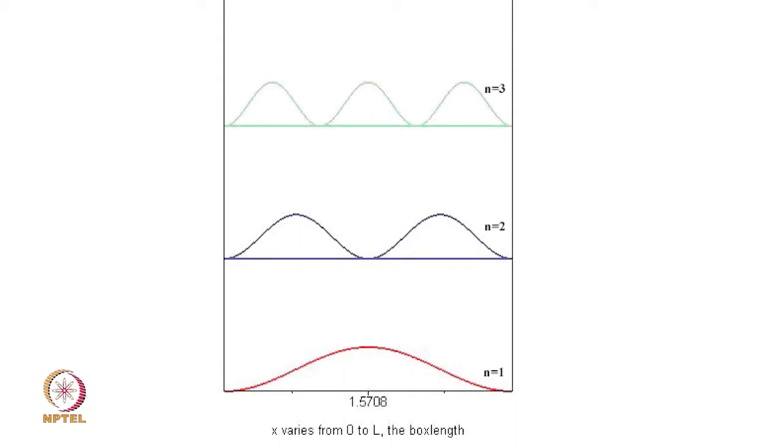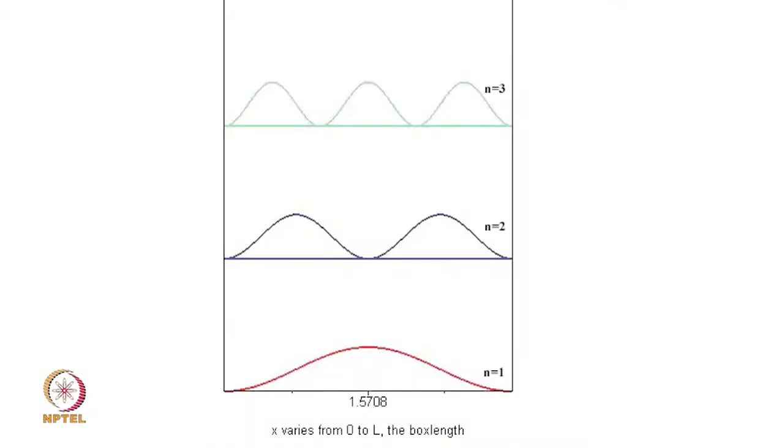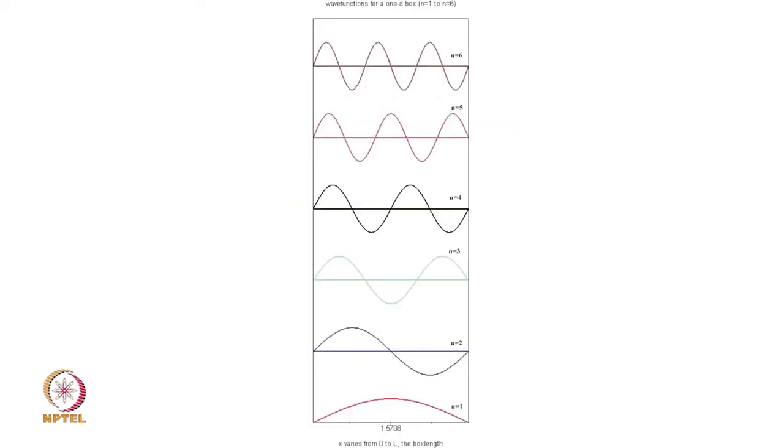When it is n equal to 2 please remember that the expression if you look at the wave function, here is the wave function itself. If you look at the wave function n equal to 1 is a half sine wave, n equal to 2 is a full sine wave, this is a 3 half sine wave and so on.